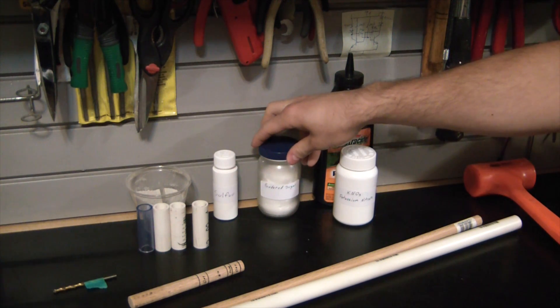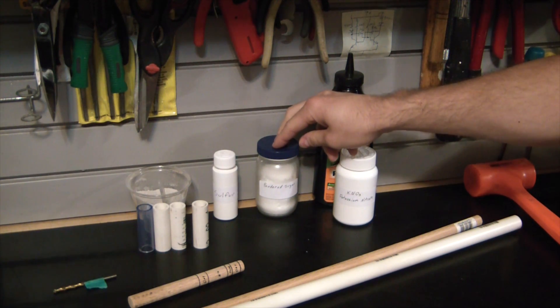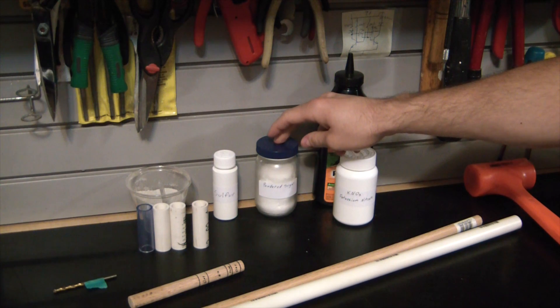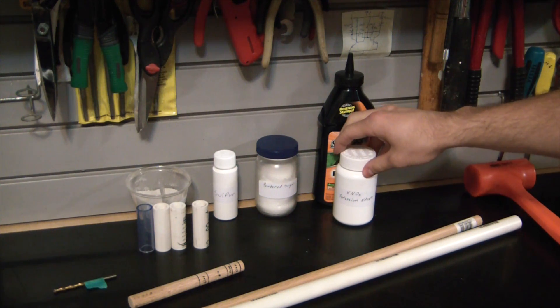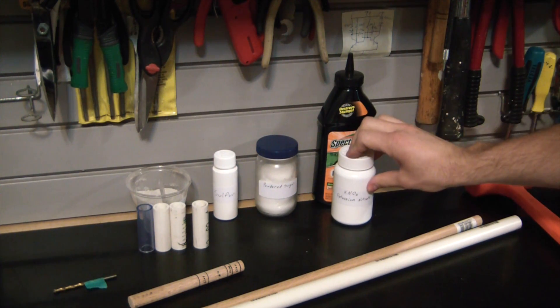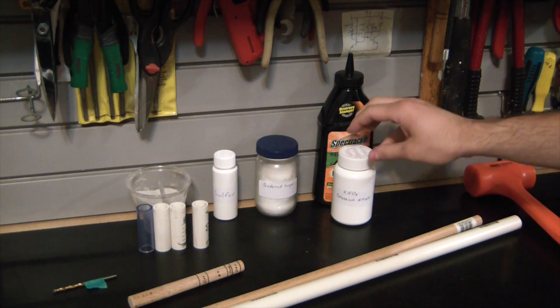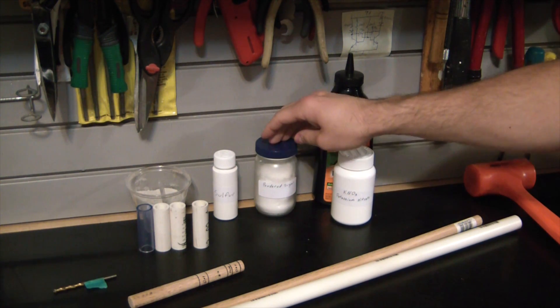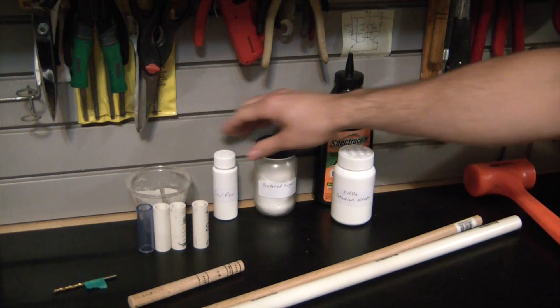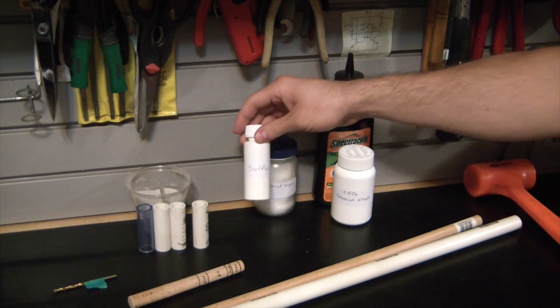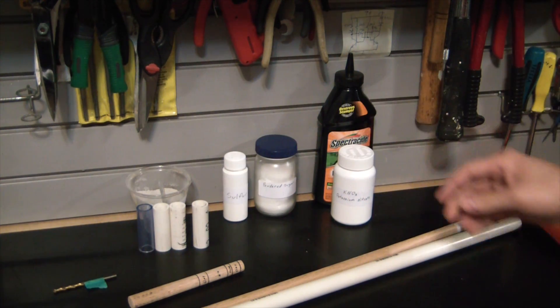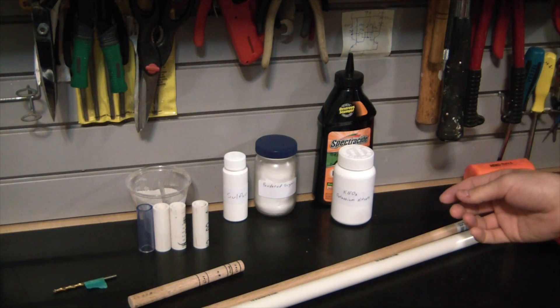The second part of the fuel is powdered sugar. This is actually acting as the fuel that the potassium nitrate oxidizes. So the potassium nitrate is supplying our oxygen, powdered sugar is acting as our fuel, and then we're also going to use a little bit of sulfur. That's to increase the burn rate, so it's acting as a burn rate catalyst.